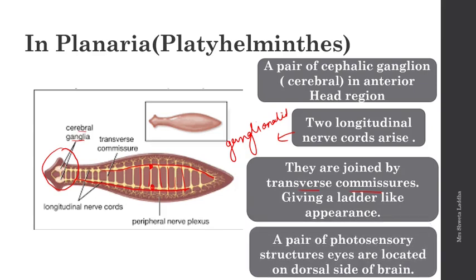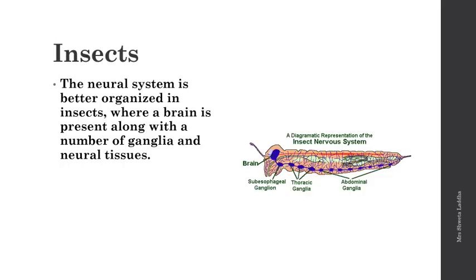Planaria also has a pair of photosensory structures called eyes, located on the dorsal surface of the brain. So in Planaria, a flatworm, they have a ladder-like nervous system with cerebral ganglia and two ganglionated nerve cords connected by transverse commissures. In insects, the nervous system is better organized — they have a brain.